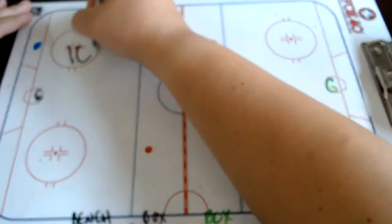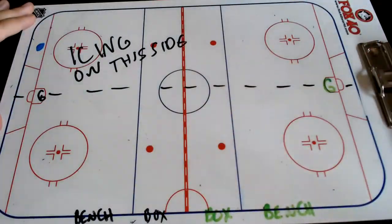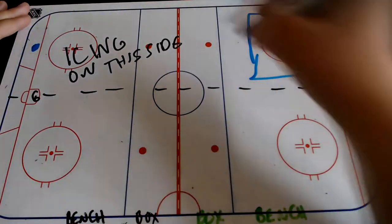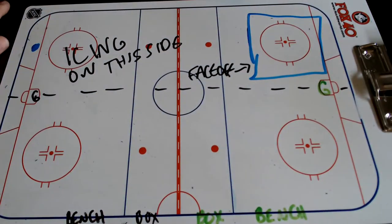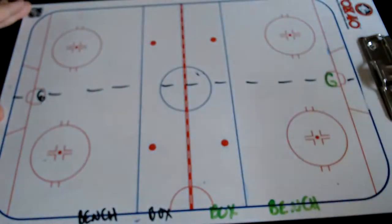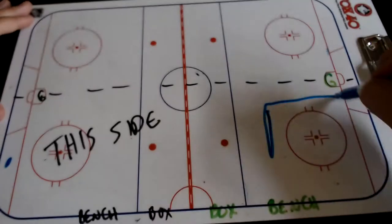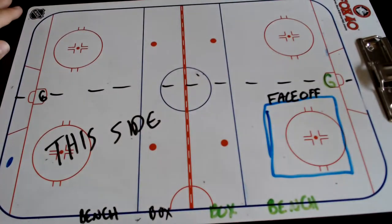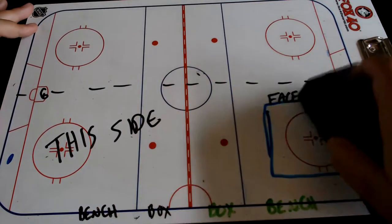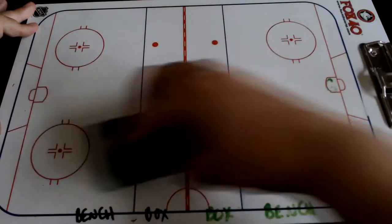When play is blown down for icing, the faceoff is going to happen all the way back at the defensive zone of the team who iced the puck, on the side where the puck was iced. The ice rink is divided right down the middle into two sides. So if it's on the right side, it comes back to the right side faceoff circle. If it's on the left side, it comes back to the left side faceoff circle.